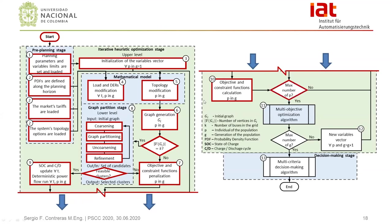Steps four through ten are repeated for each particle in the current generation. The final objective function and constraint values are analyzed by the optimization algorithm in the upper level in step eleven, to define the best solution so far and create a new decision variable vector in step twelve — iteratively exploring and exploiting the search space to find a final Pareto optimal set of possible solutions to the microgrid planning problem. The final step of the methodology is a multi-criteria decision making step, where an Analytic Hierarchical Process technique is proposed to systematically select a single solution from the Pareto optimal set.